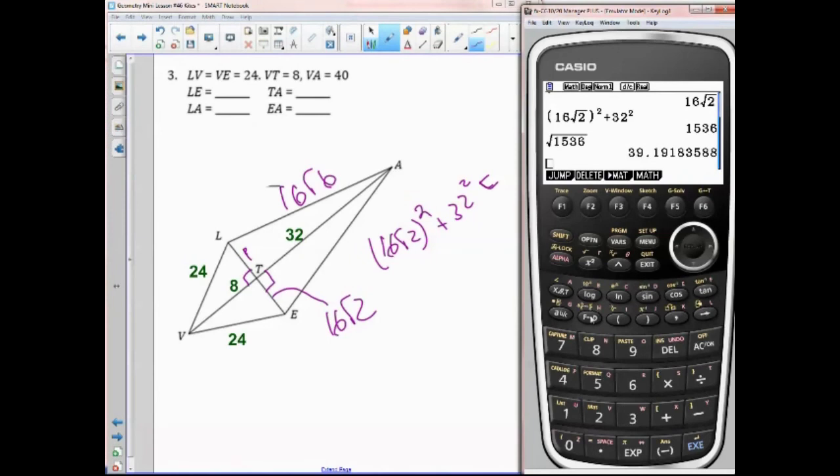So that's how you find all these sides. I prefer exact until the very, very end is when you can round. And if you rounded here, and then you rounded here, you would not get quite close to 39.2, maybe 39.3, or whatever, or 4, so on. Okay, so that's pretty much it for kites. I will catch y'all later.